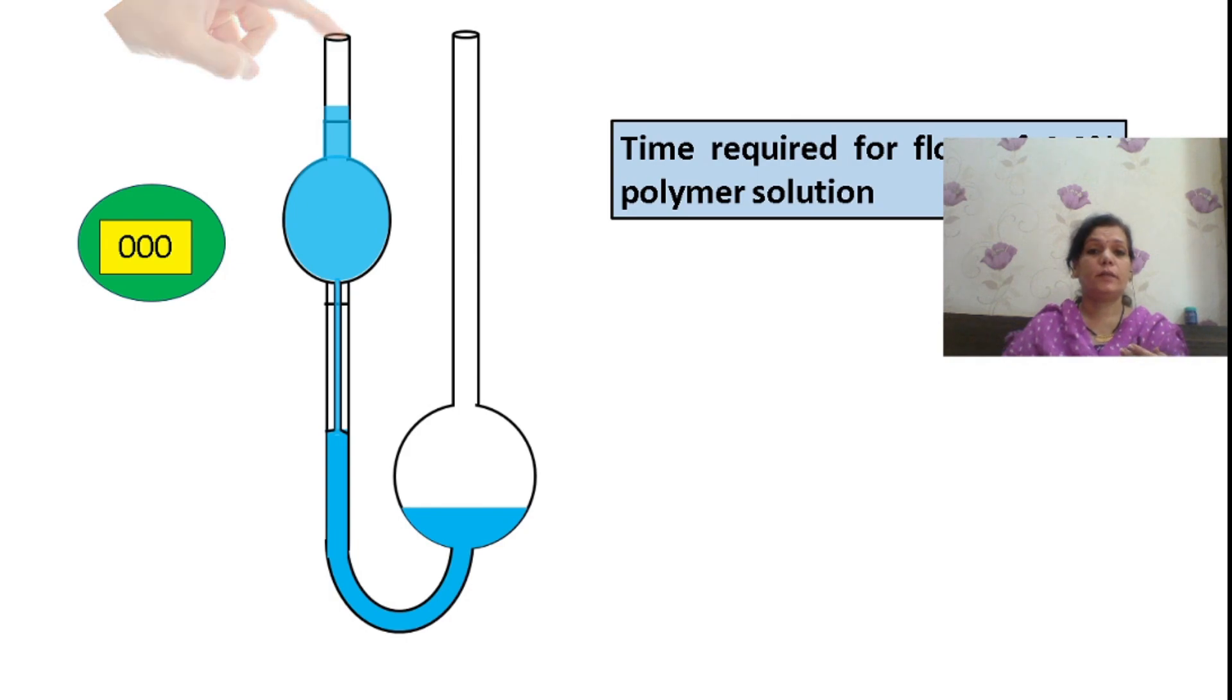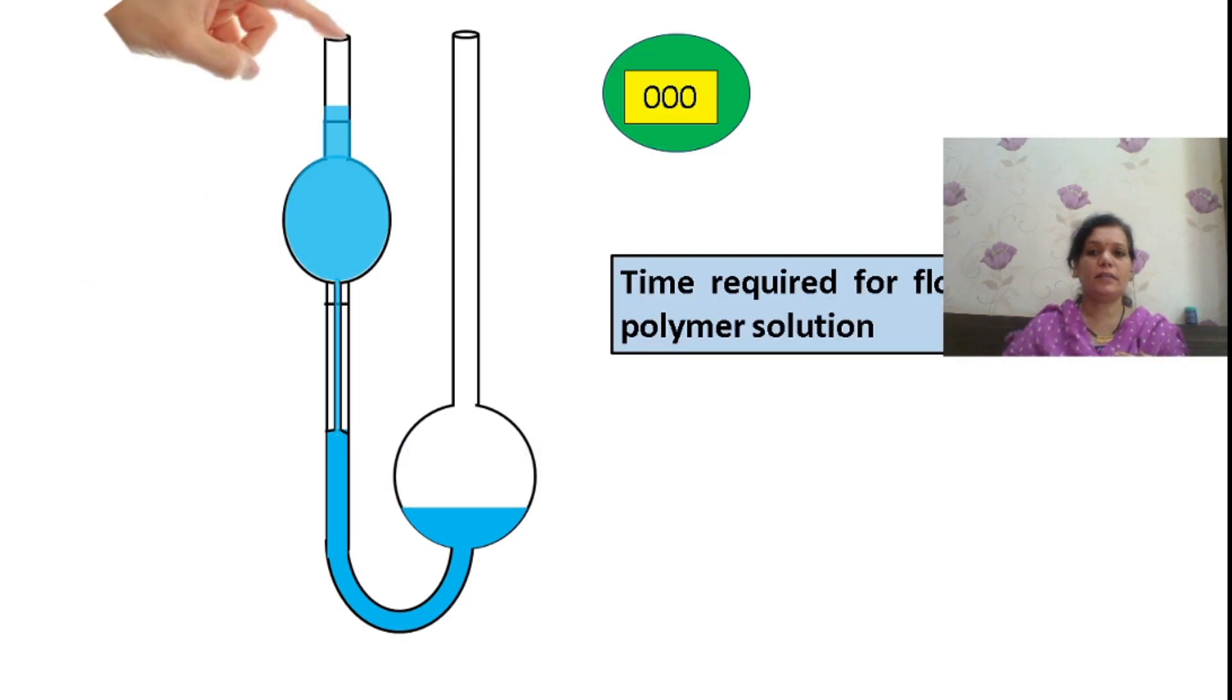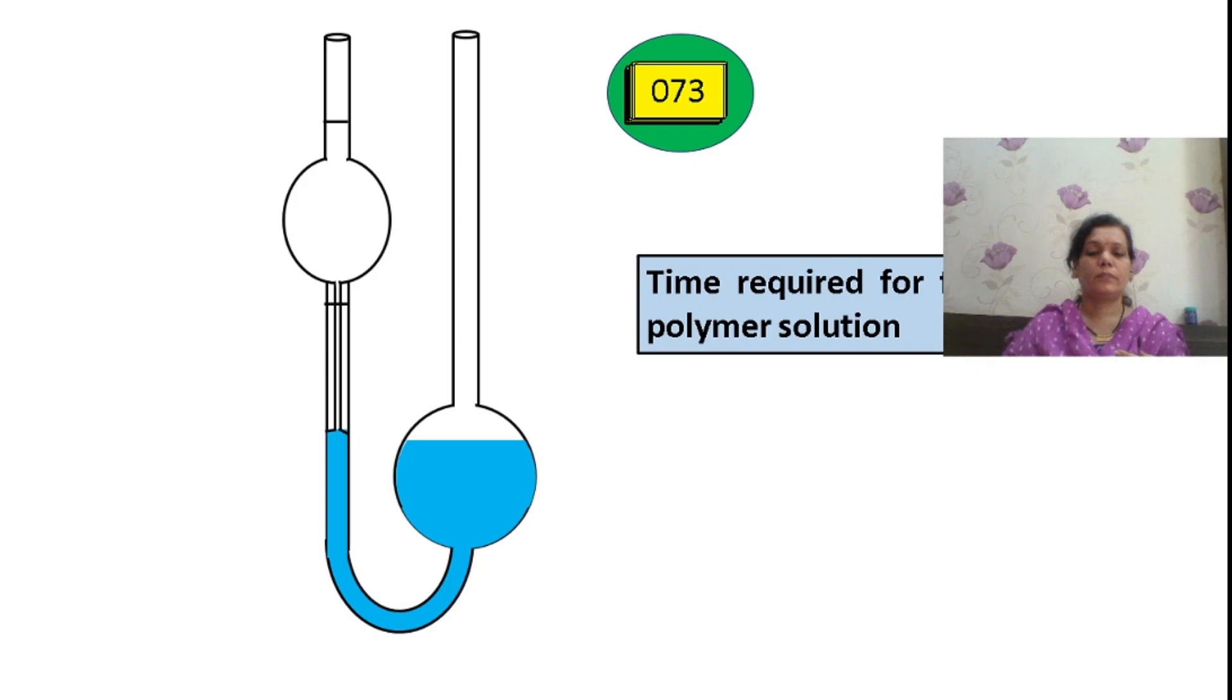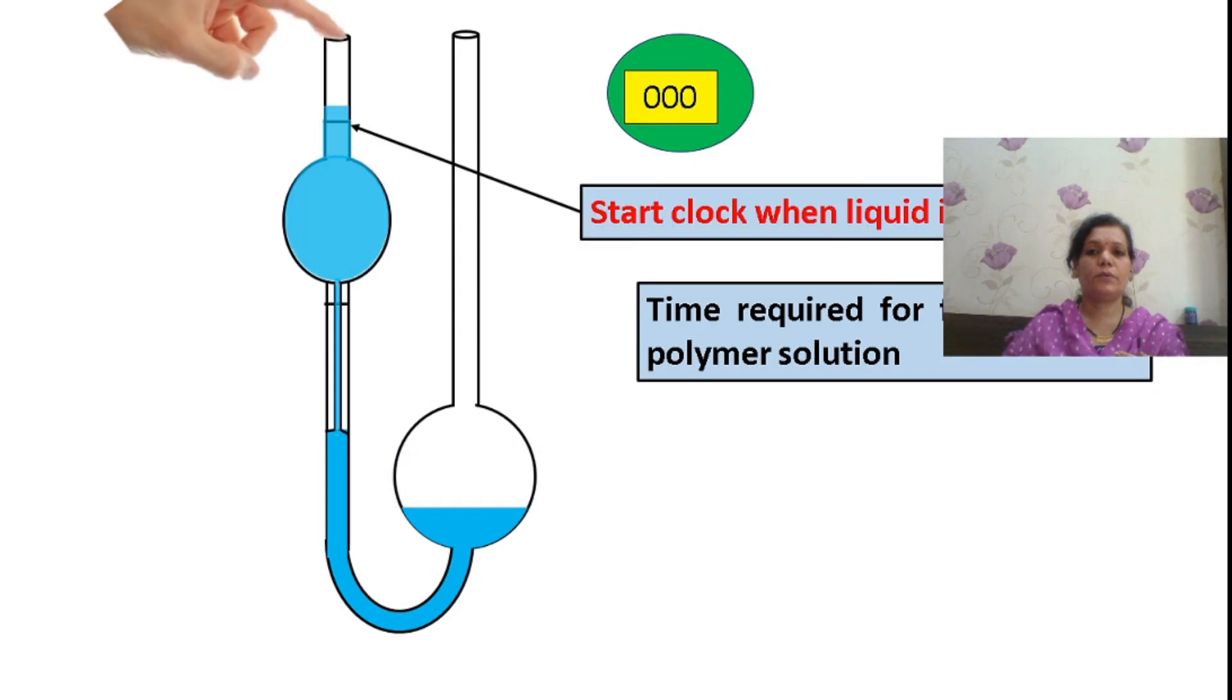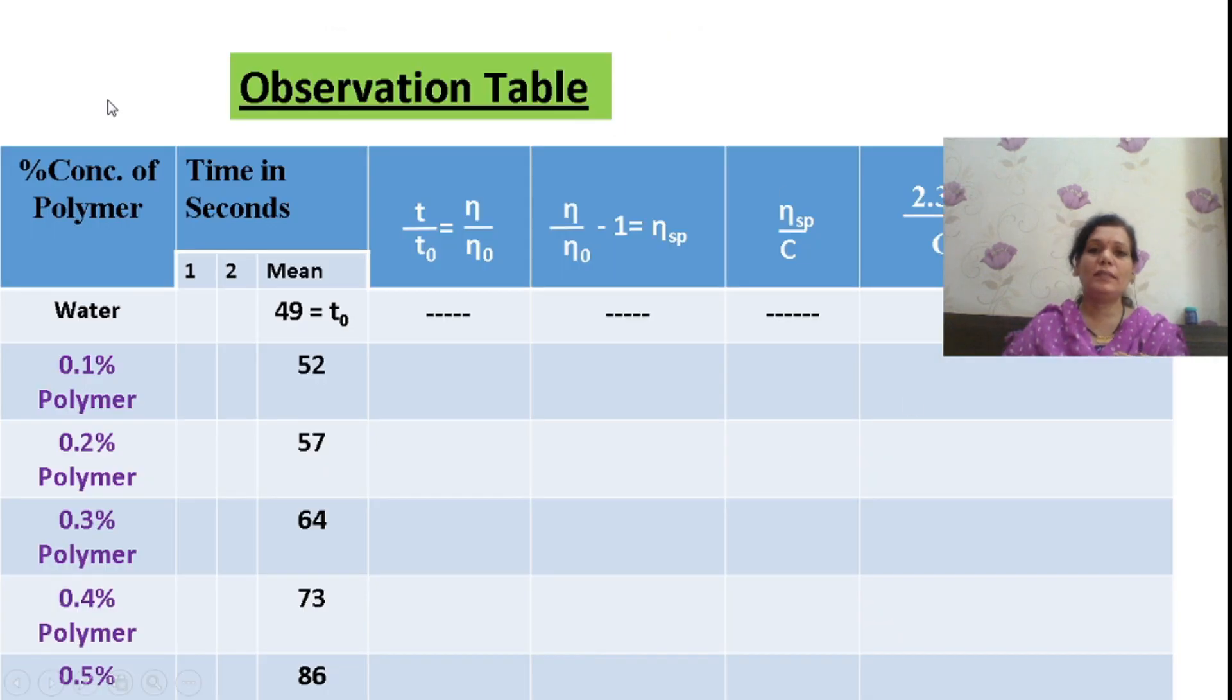Look at 0.2%, it is 57. What do you expect? For 0.3% it will increase or decrease? It will definitely increase. And for 0.4%. Again, this is for 0.25%. Report all the readings in this observation table, which we have prepared: percent concentration of polymer, time in seconds.